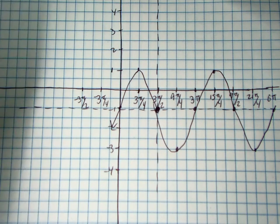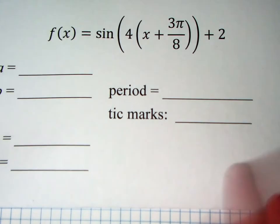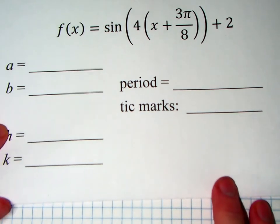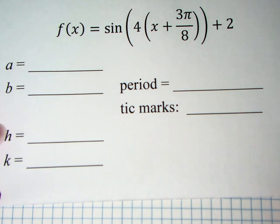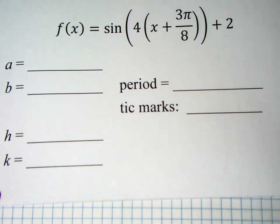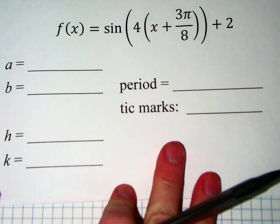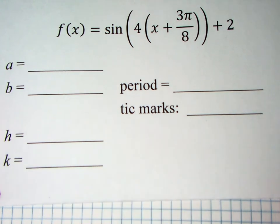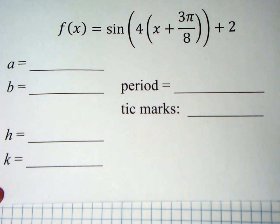Alright, so for right now, I'm going to give you another one that you can practice on your own. So here is another function. And at this time, I'm going to ask you to pause the video. Make sure and write that function down, fill all those values in, find the period, find your tick marks, and then do the graph. Once you are finished with all of that, you can start playing the video again, because I'm going to fill all those in and do the graph.